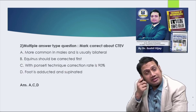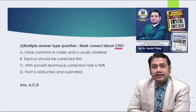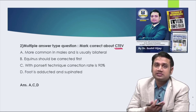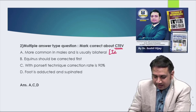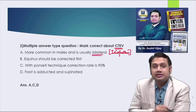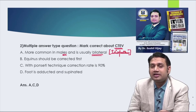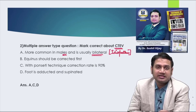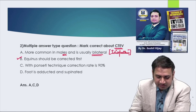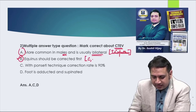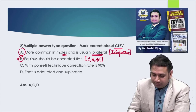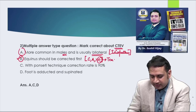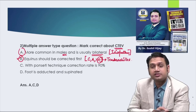Question two was a multiple correct option type about CTEV (clubfoot). CTV is more common in males and is usually idiopathic — majority of cases have no other anomaly associated, are usually bilateral, and more common in male children. Regarding correction sequence: equinus should be corrected first? No — the correct sequence is CAVE: Cavus first, then Adduction, then Varus, and Equinus is always the last to be treated. Correction of equinus requires tenotomy of tendo Achilles.